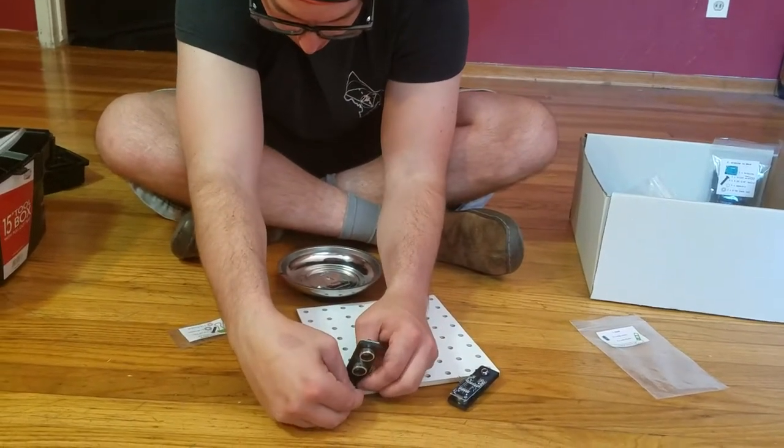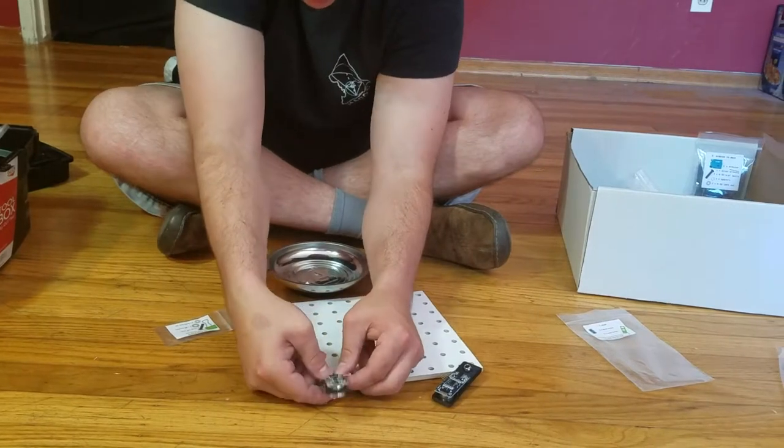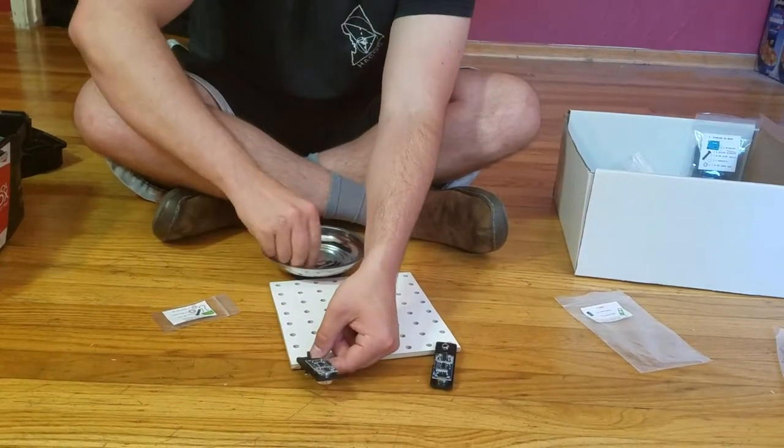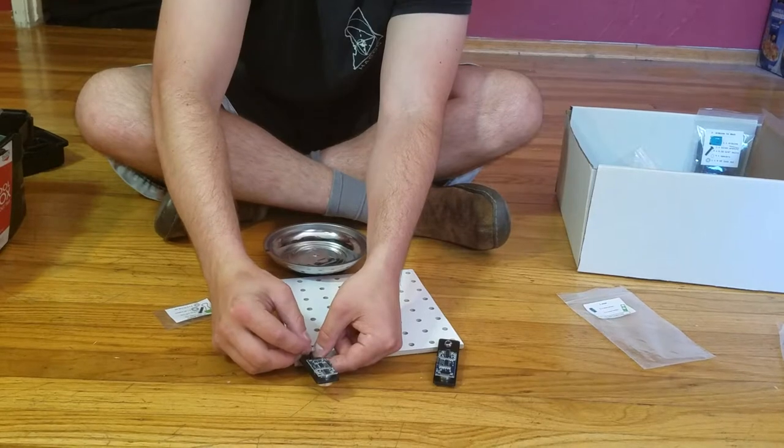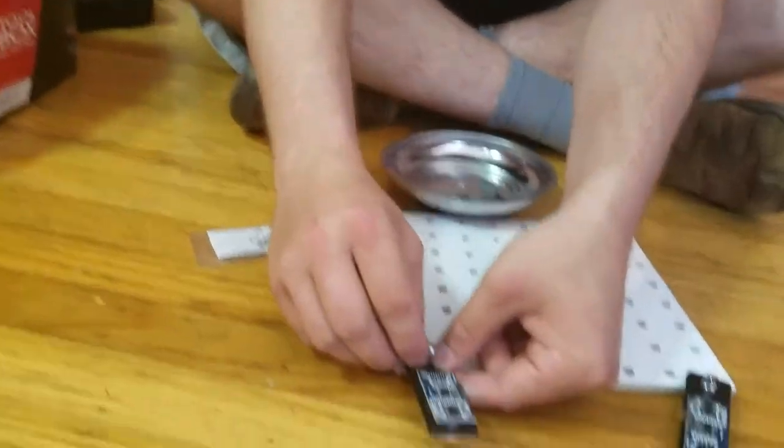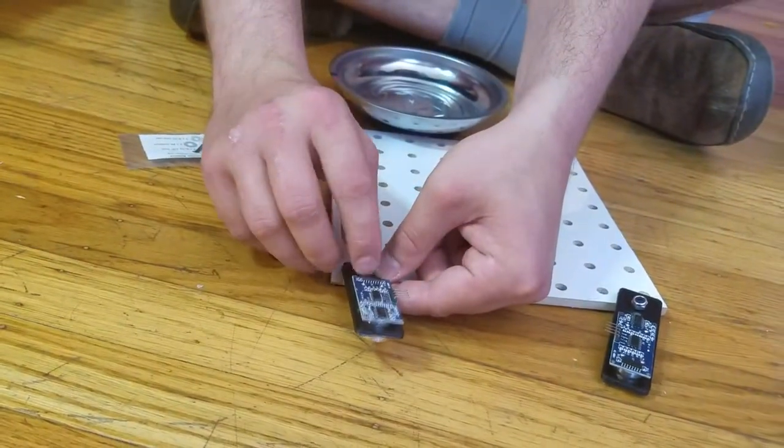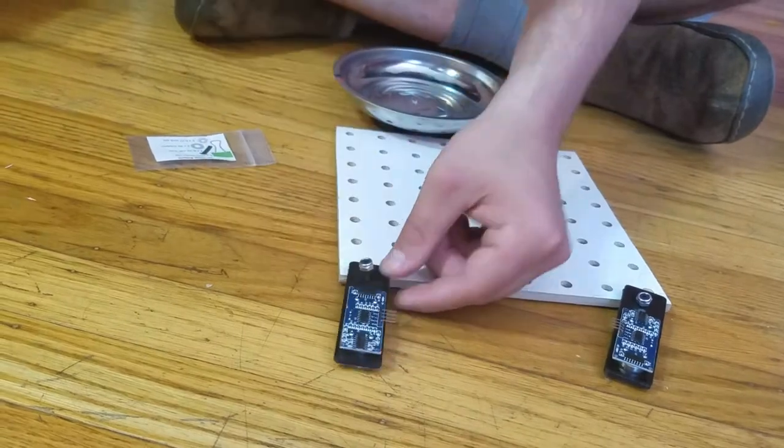Then we'll take the lock nut and put it on top, again with the plastic side up and the metal side down, and we'll finger tighten that.